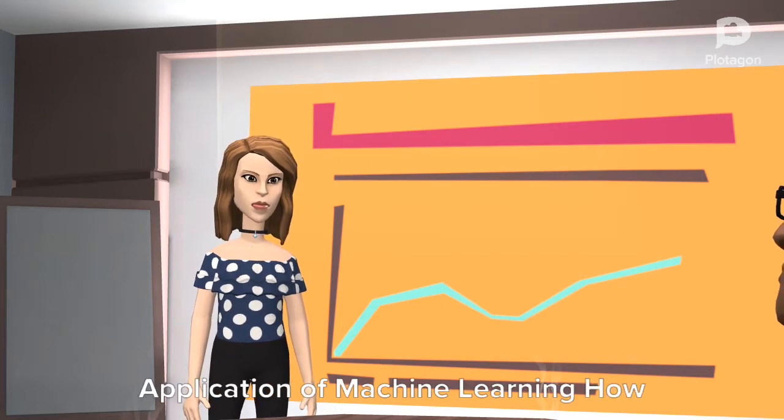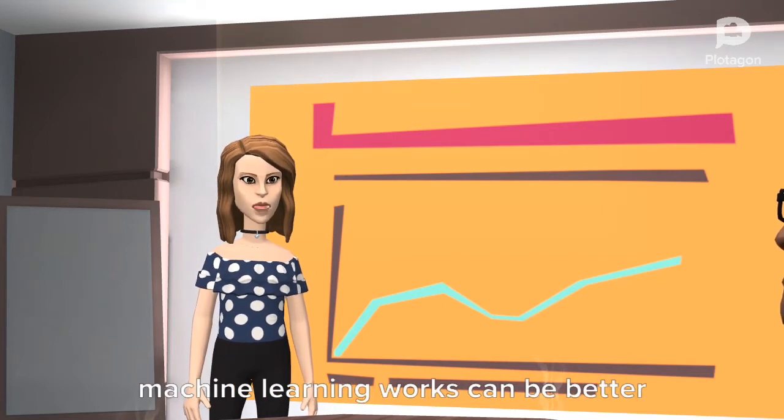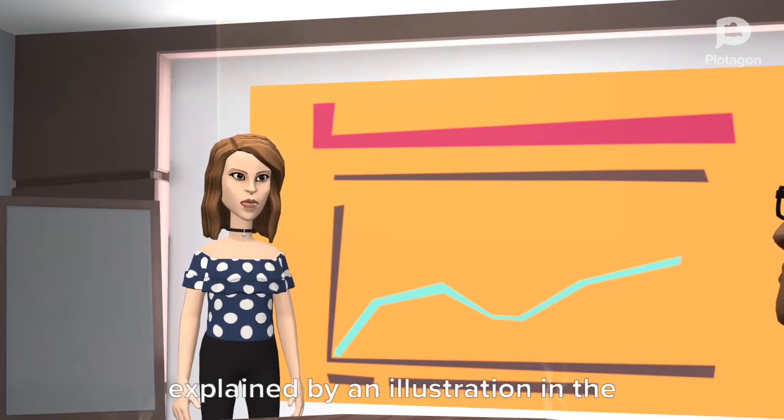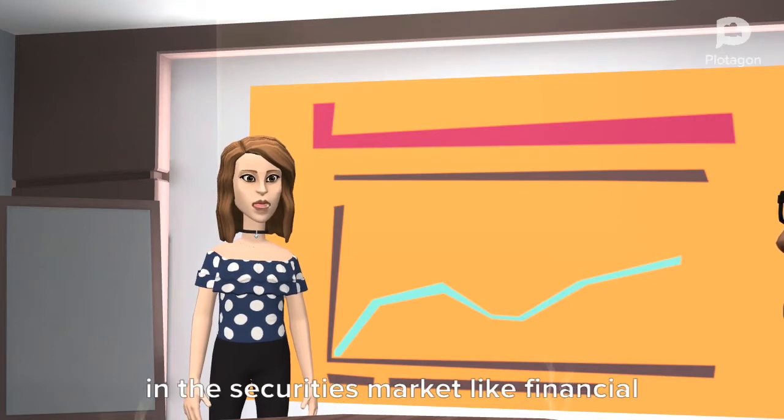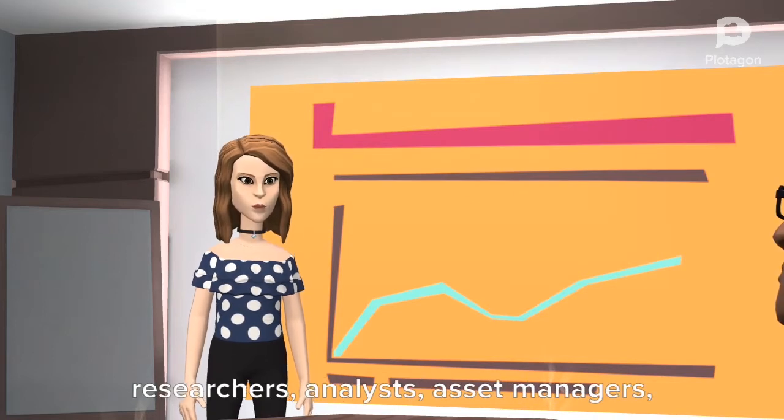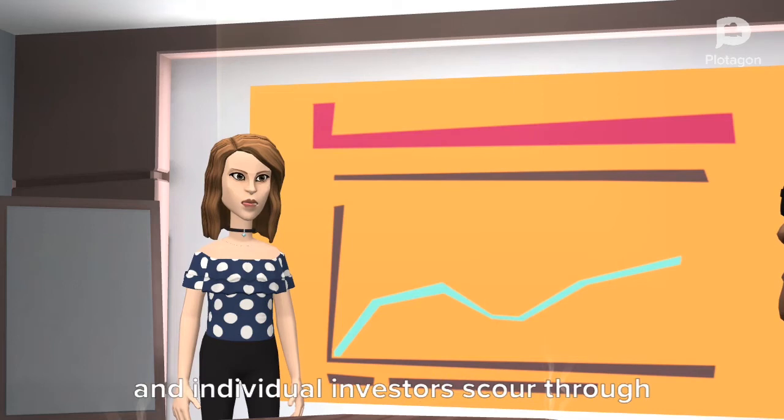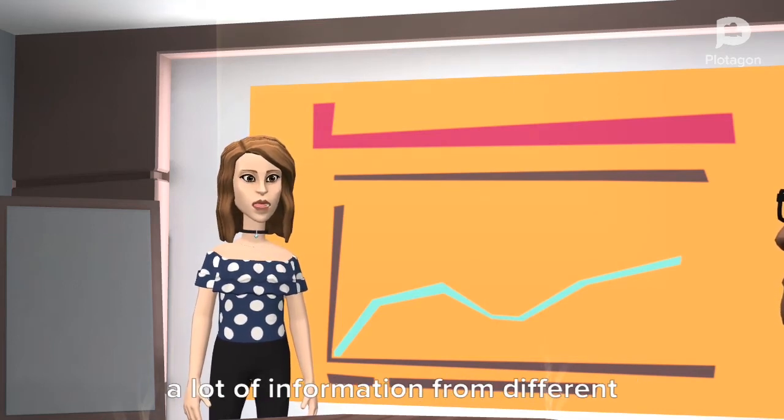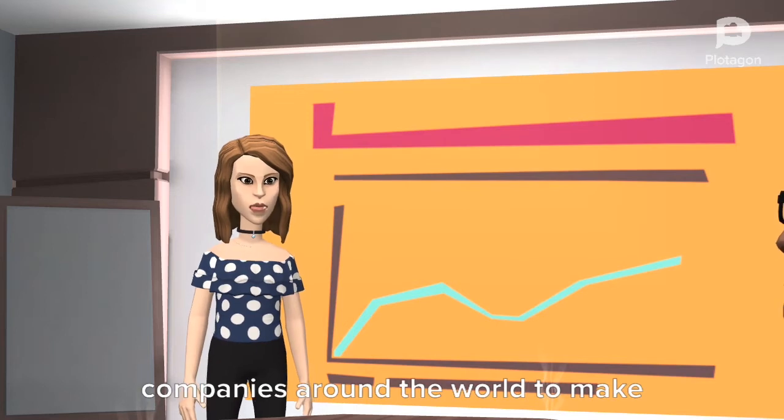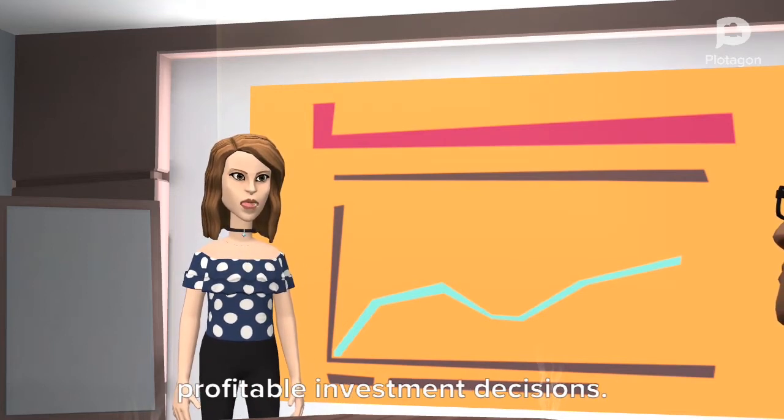Application of machine learning. How machine learning works can be better explained by an illustration in the financial world. Traditionally, investment players in the securities market like financial researchers, analysts, asset managers, and individual investors scour through a lot of information from different companies around the world to make profitable investment decisions.